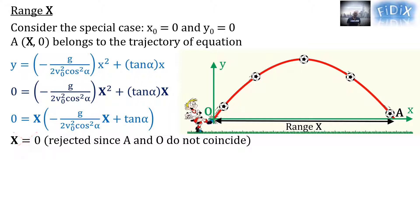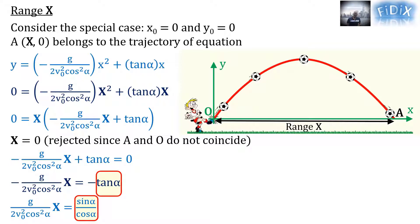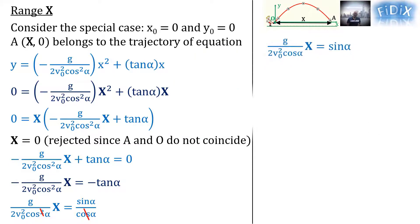To find the second root, we write the second factor equals zero. We move tan α to the right side of the equation, then we multiply the two members of the equation by negative one to cancel the minus sign.